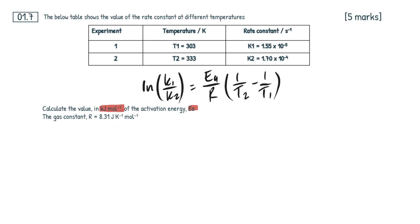Now, the biggest tip of your life here for Arrhenius equations is going to be: what are the energy units? In the question, they ask you to write out the activation energy in kilojoules per mole, and that's always going to be the case unless they randomly ask you in joules per mole, but it's normally kilojoules per mole in every question I've seen.